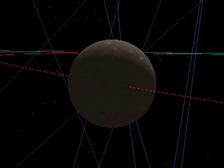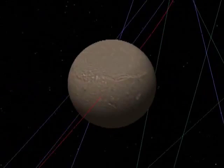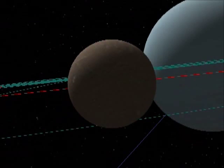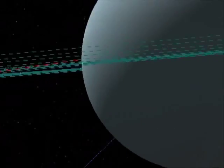Next one along, Miranda. This is Miranda. This is quite a bit closer to Uranus, and a bit darker.